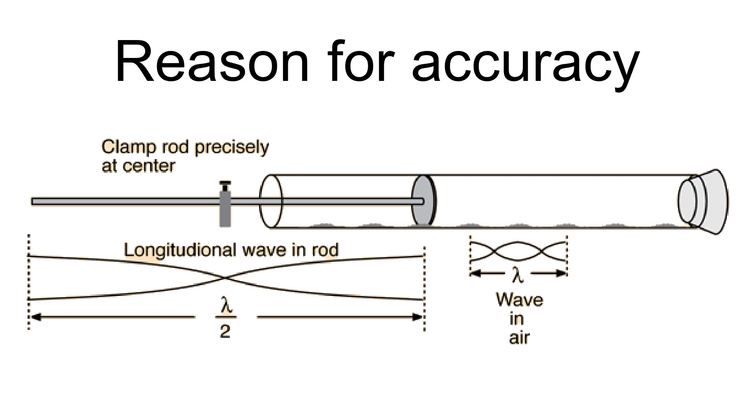A less accurate method of determining wavelength with a tube, used before Kundt, is simply to measure the length of the tube. The length of the tube at resonance is approximately equal to a multiple of a half wavelength.